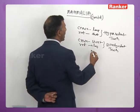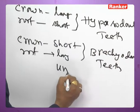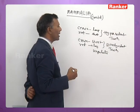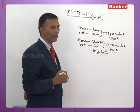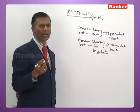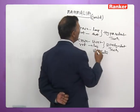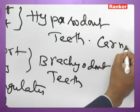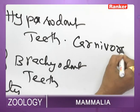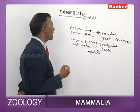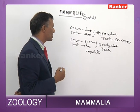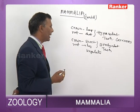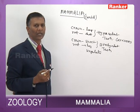In ungulates like cows and buffaloes, teeth are mostly brachyodont. Whereas in carnivore mammals like squirrels and tigers, the crown part is long and root is short — these are hypsodont teeth. So hypsodont teeth are present in carnivores, while brachyodont teeth are present in ungulates.